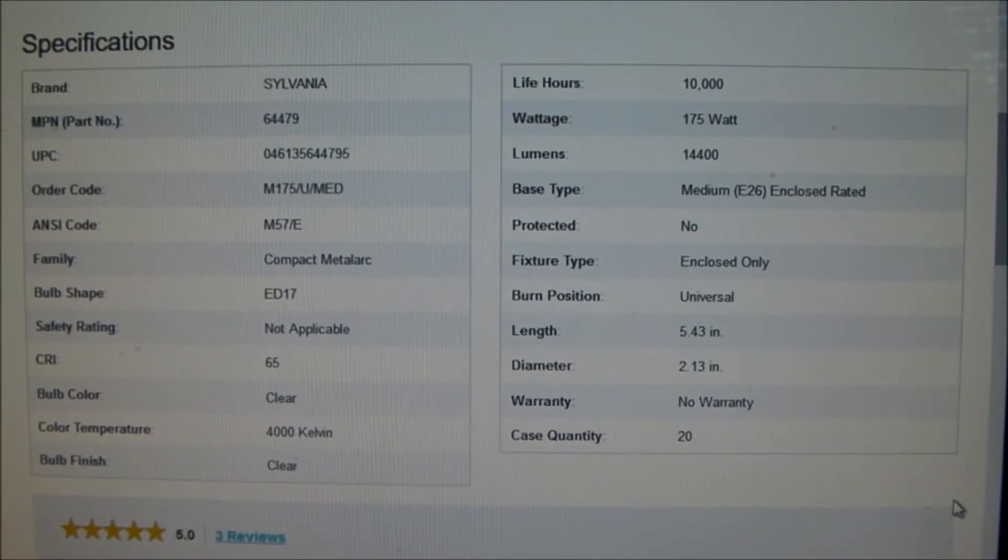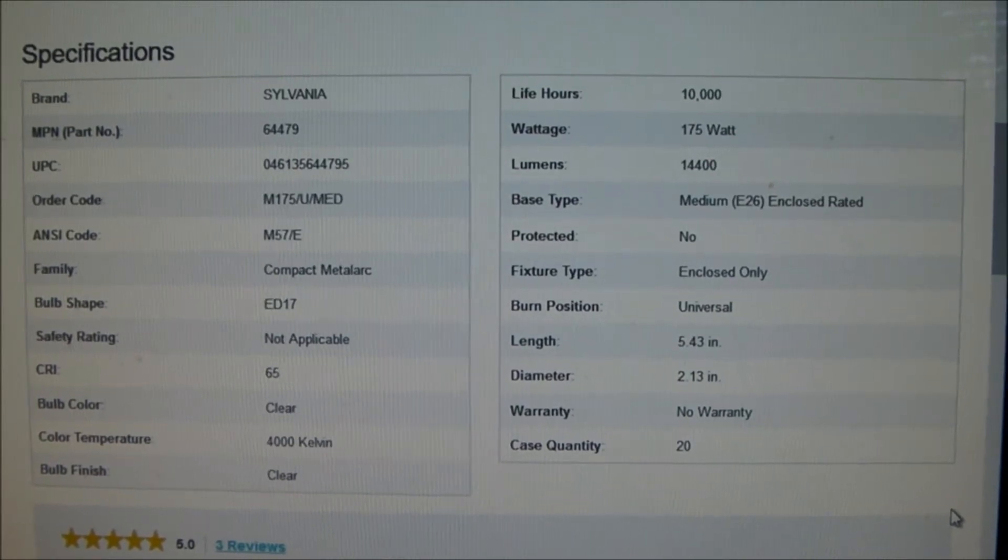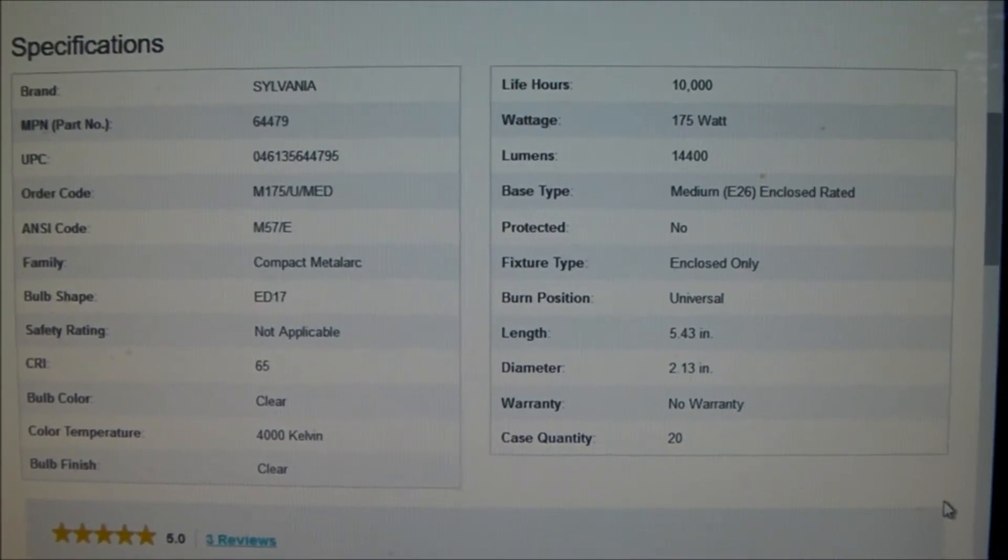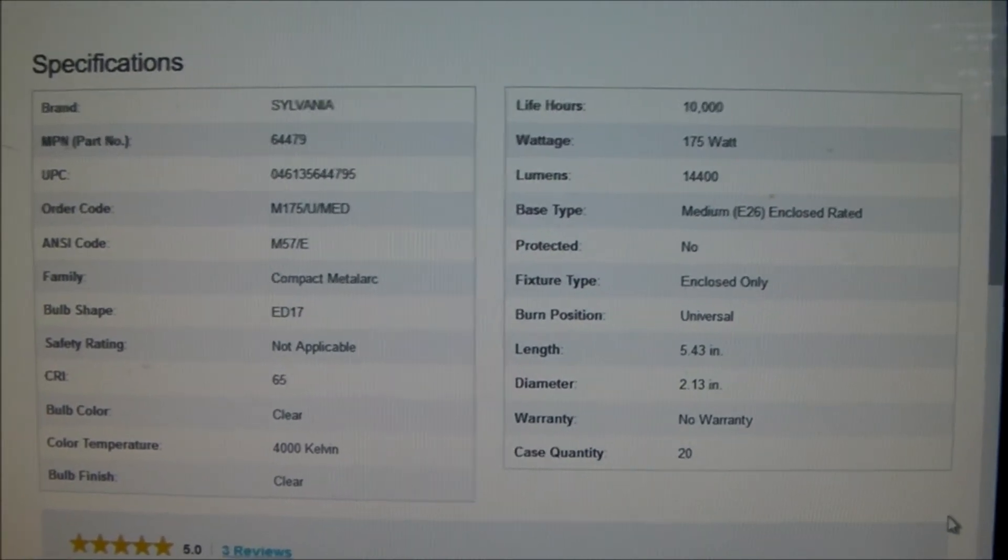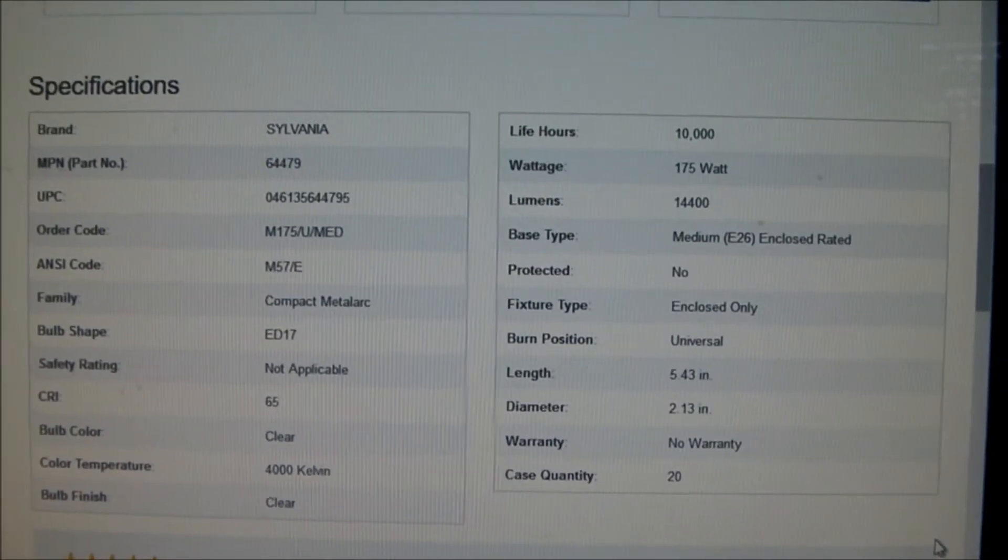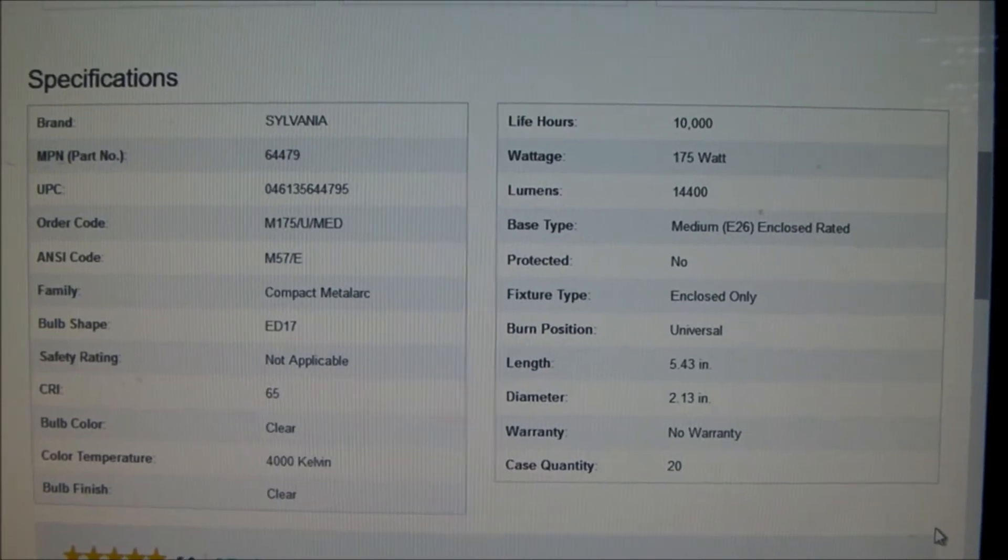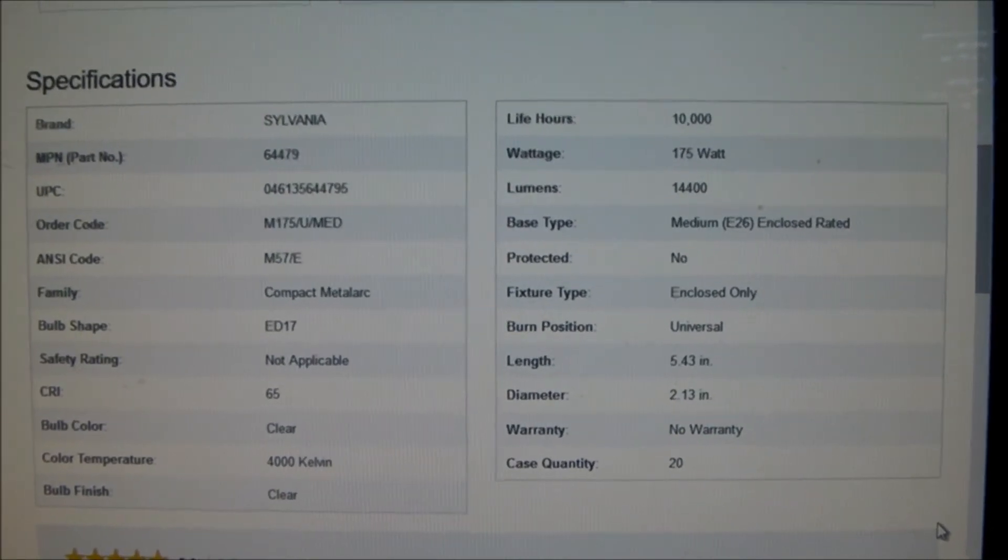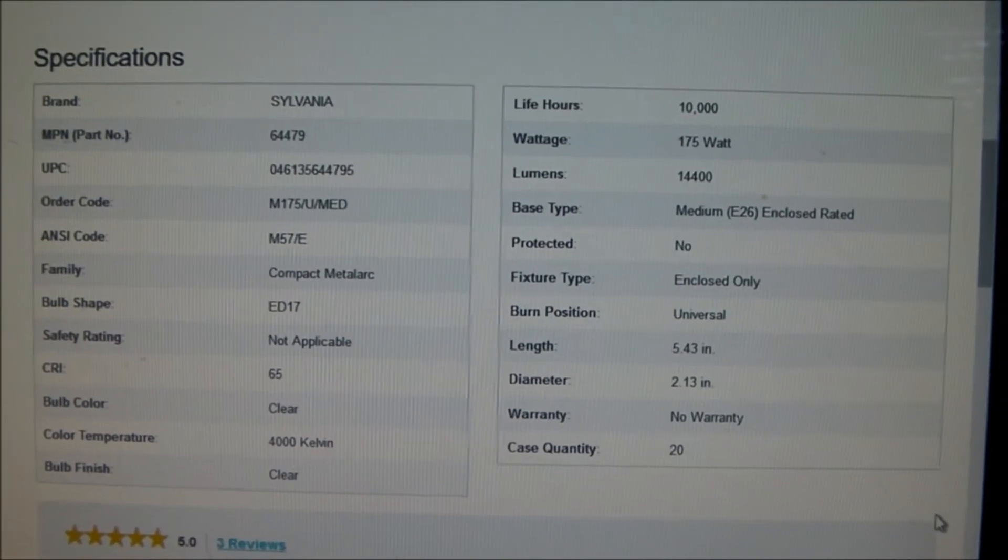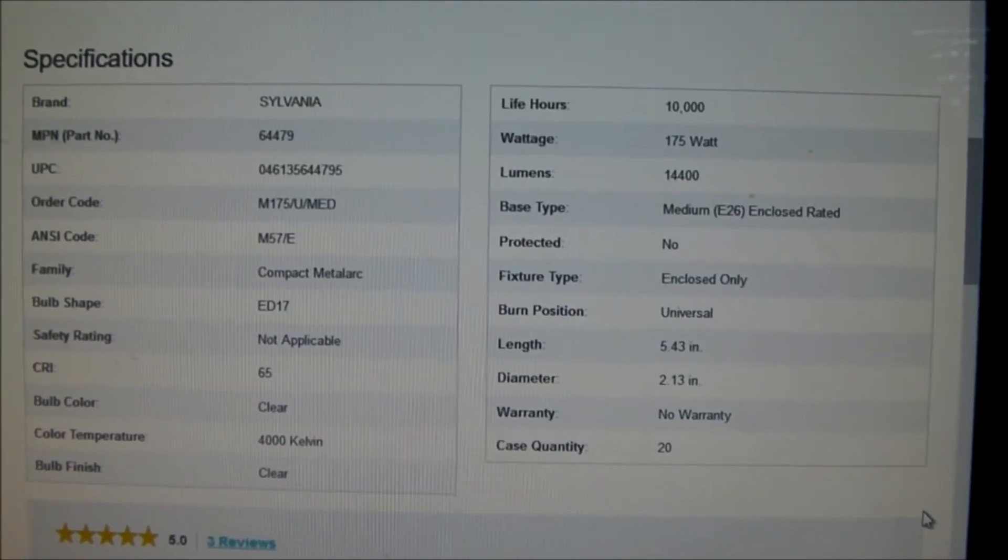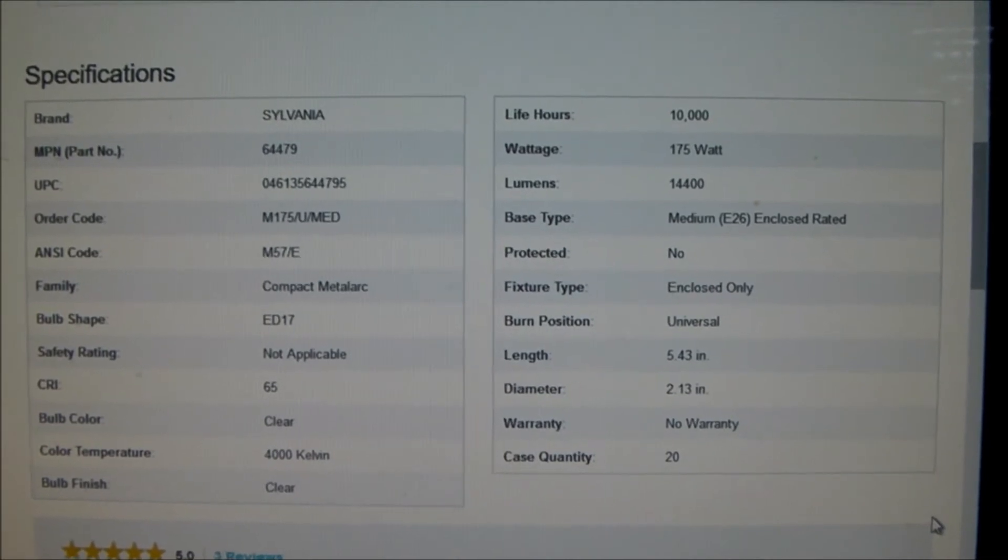Well as it turns out, apparently lumens are not lumens. The LED is much more efficient at getting the lumens down to the ground. That's what I read in many places. That seems to be the prevailing thought. So that would suggest that you can get by with fewer lumens than 14,400 and still get approximately the same amount of light at the ground.